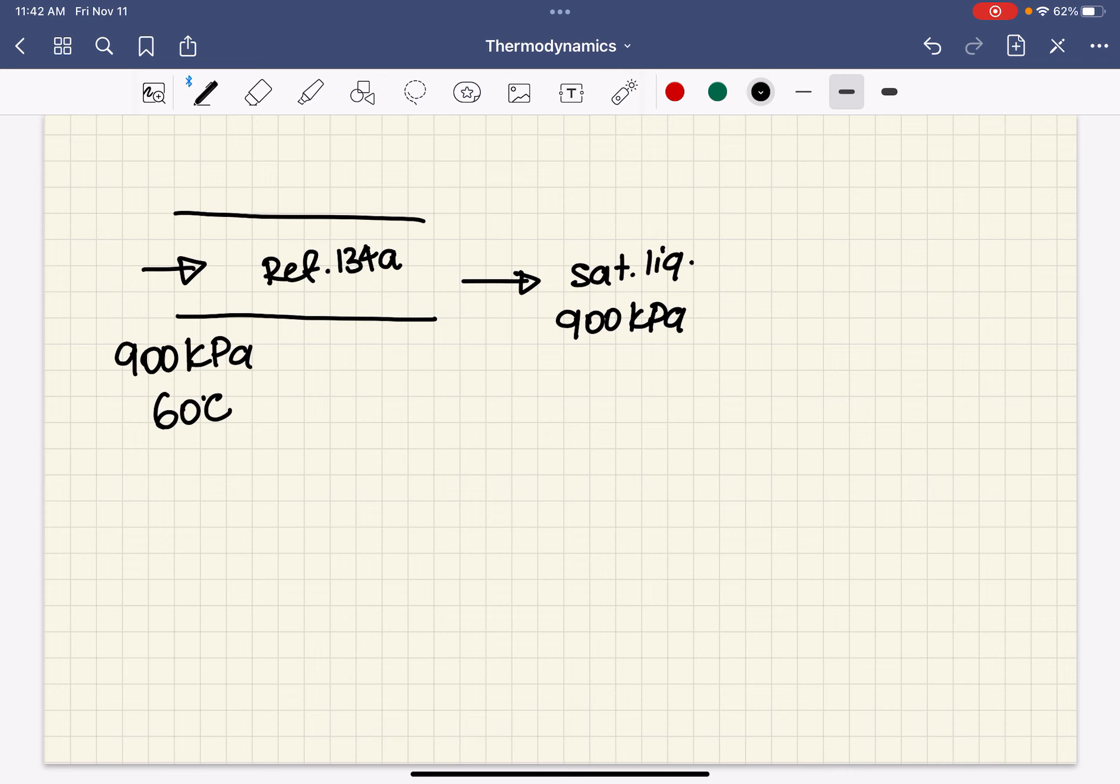Determine the heat transfer from the refrigerant to the environment per unit mass. So they are asking for the lowercase q_out, because that is energy per mass.